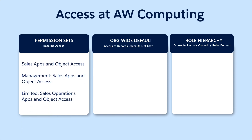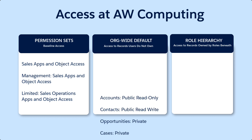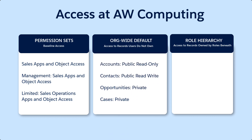We've determined the baseline level of access that our different types of users have to objects using permission set groups and permission sets. We set our org-wide defaults to determine the access users have to records they do not own. And we created a role hierarchy to open access back up based on someone's role in the hierarchy.